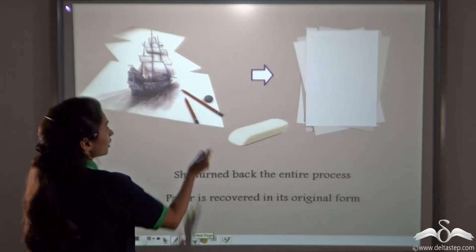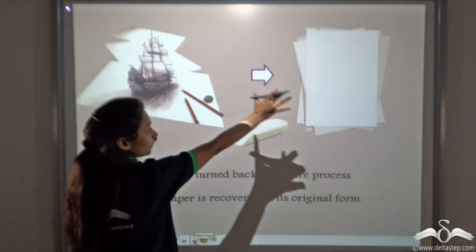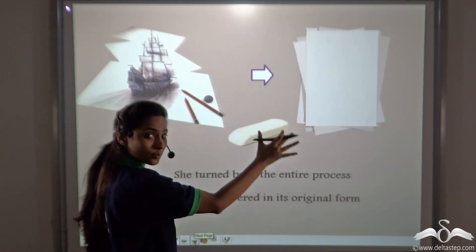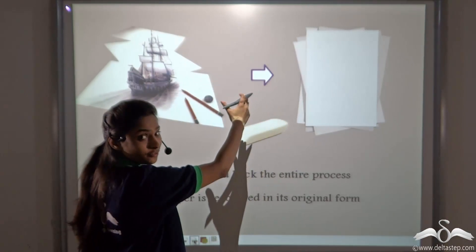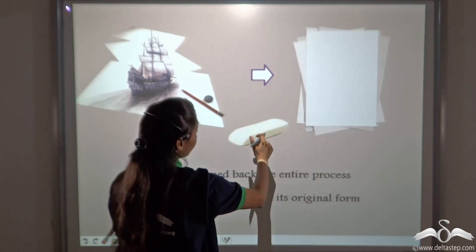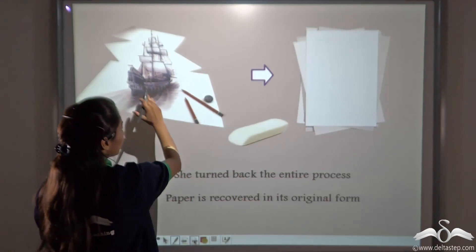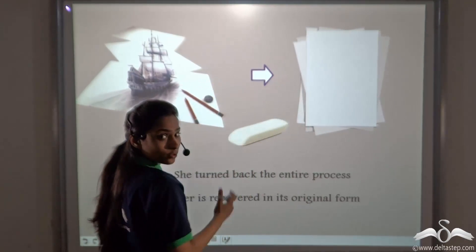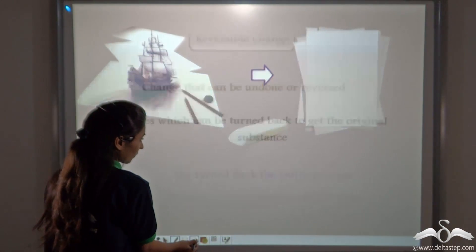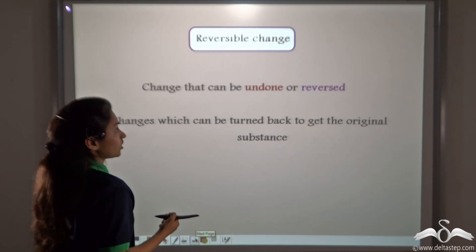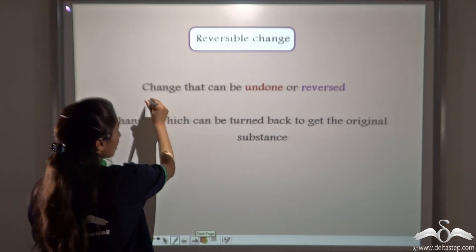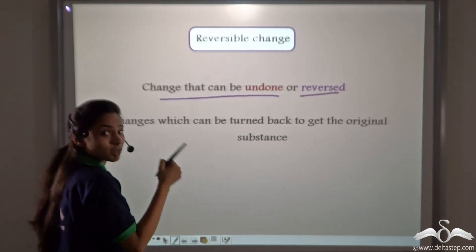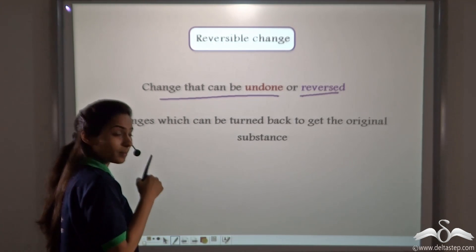She erased this whole drawing to get the plain paper. She reversed this process — she turned back the entire process. Paper is recovered in its original form. She made it into a drawing and then erased the whole drawing to get the plain paper back. So she reversed the change she made to the paper. This is called a reversible change. A reversible change is a change that can be undone or reversed, like Rhea reversed the change of drawing and got the plain paper back.